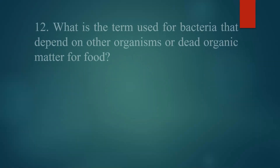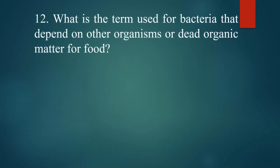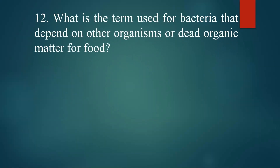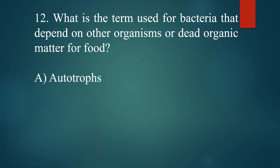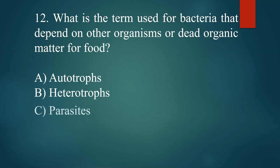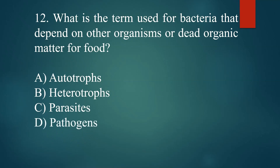What is the term used for bacteria that depend on other organisms or dead organic matter for food? A. Autotrophs. B. Heterotrophs. C. Parasites. D. Pathogens. Answer: B. Heterotrophs.